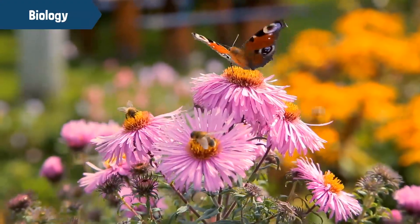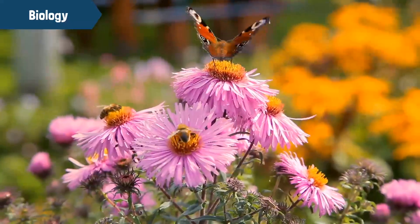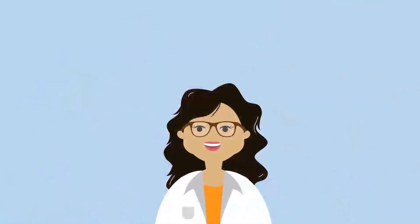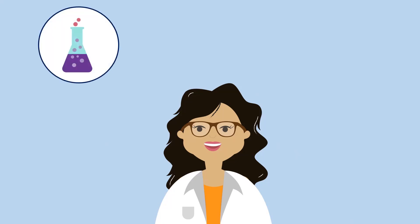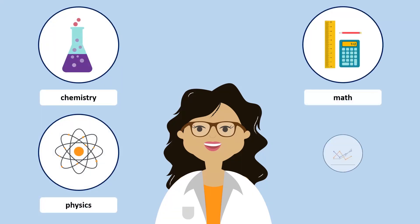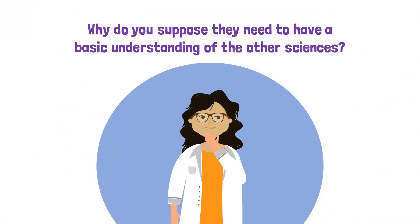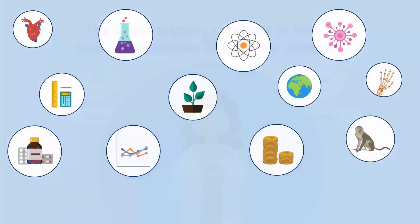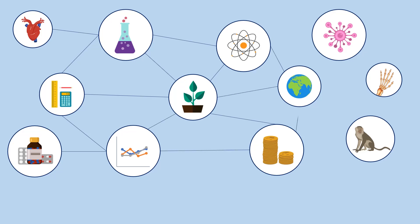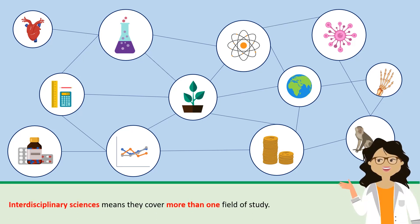Biology is a huge, diverse field that studies all living organisms. While all biologists need to have some basic understanding of chemistry, physics, math, and statistics, they don't have to become specialists in them. All sciences are connected to each other in some form, and at times they may overlap. When they do, we call these interdisciplinary sciences, meaning they cover more than one field of study.